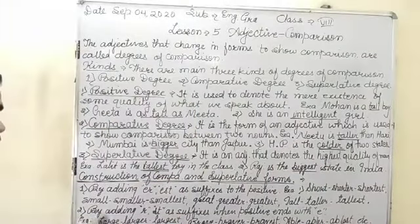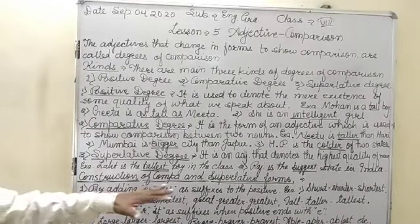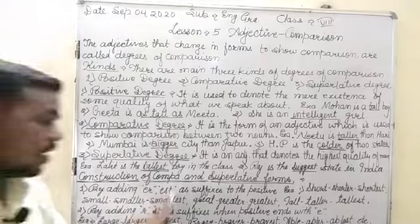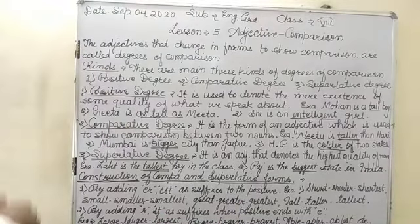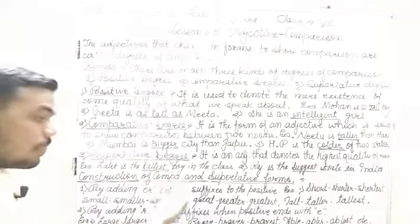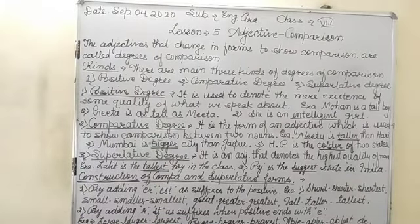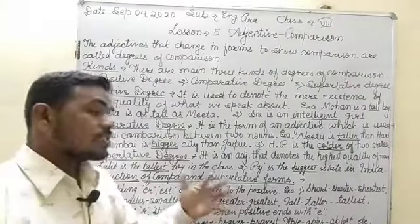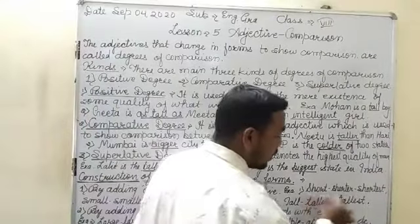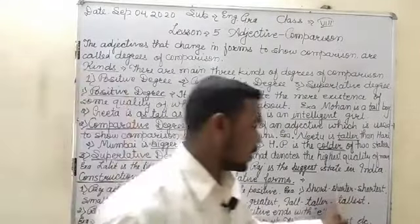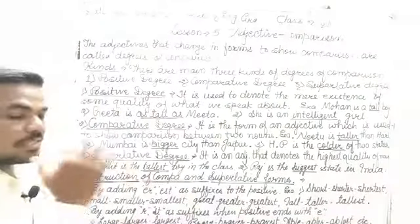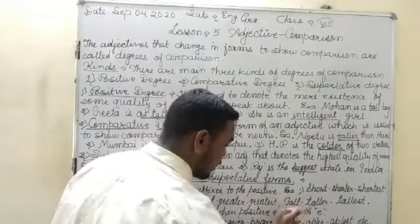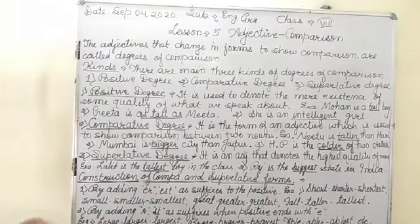Now we are going to study the construction of comparative and superlative forms. By adding -er and -est as suffixes to the positive form — if we want to construct the comparative and superlative degree of any positive adjective, we add -er in comparative and -est in superlative as suffixes. For example: short → shorter → shortest.